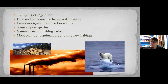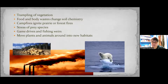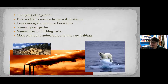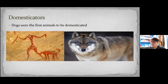Human impacts on the environment include trampling vegetation, changing soil chemistry through waste and fertilizers, campfires, forest fires, overhunting of prey species, and fishing with game weirs. We also move plants and animals into new environments. My parents live in Australia — rabbits were introduced there because some colonist wanted to hunt something, and now Australia is overrun with rabbits because they have no natural predator. We've had some pretty serious impacts.